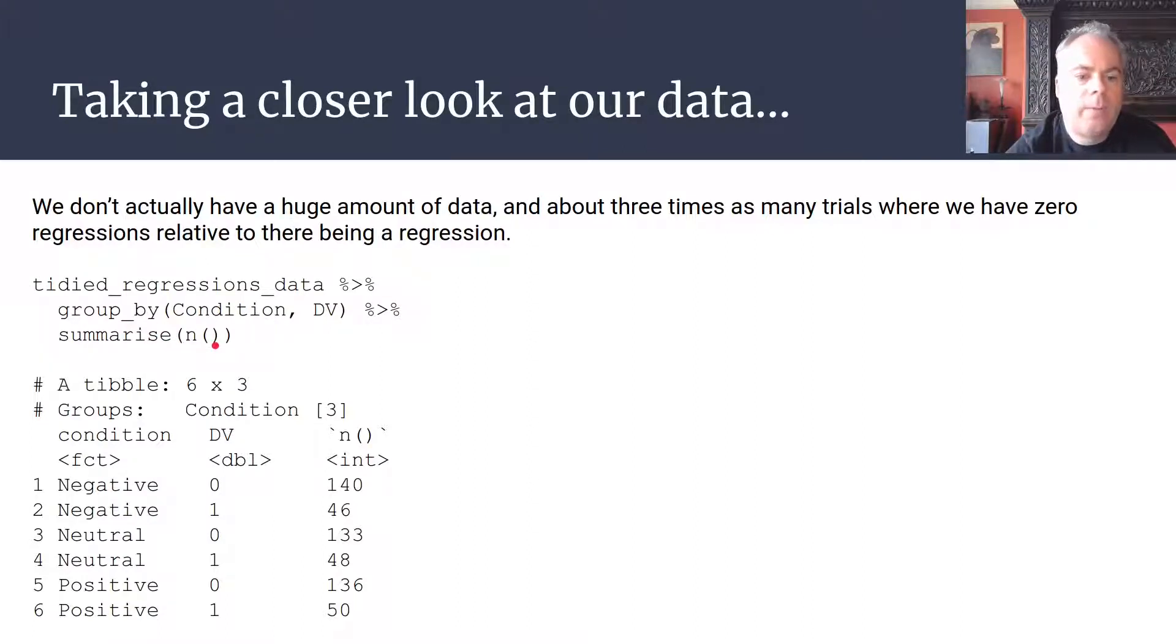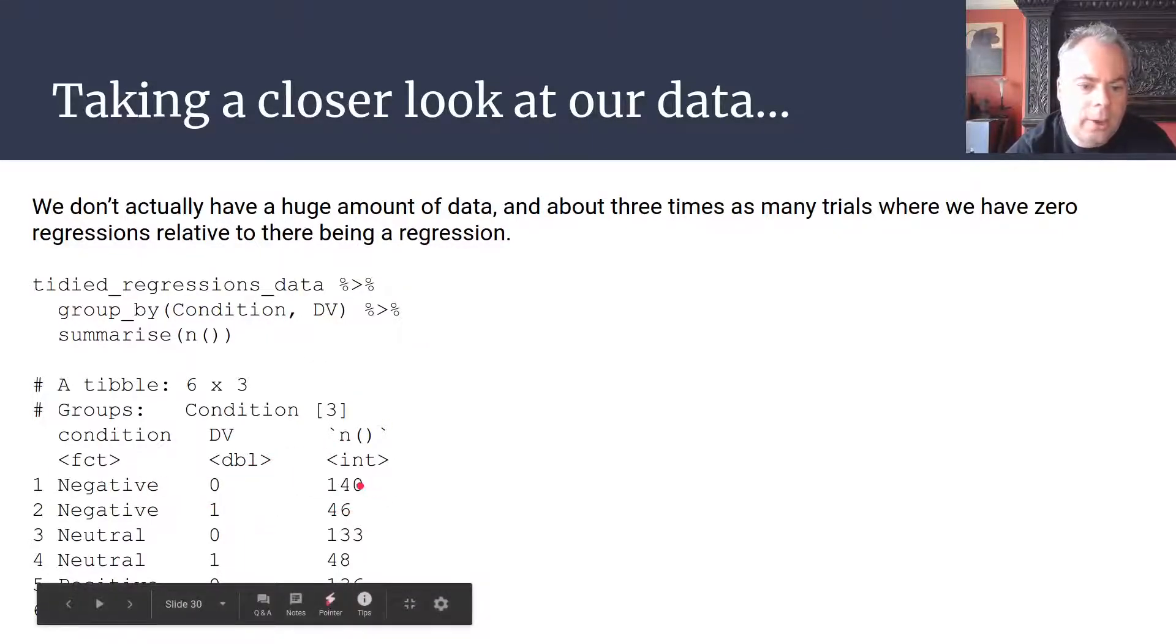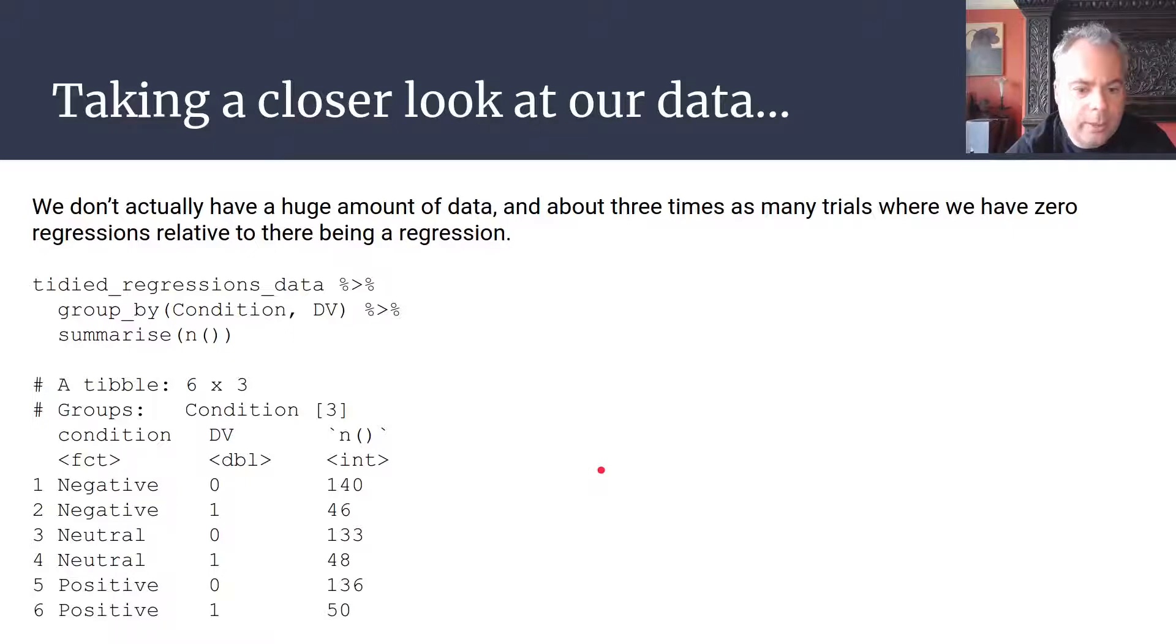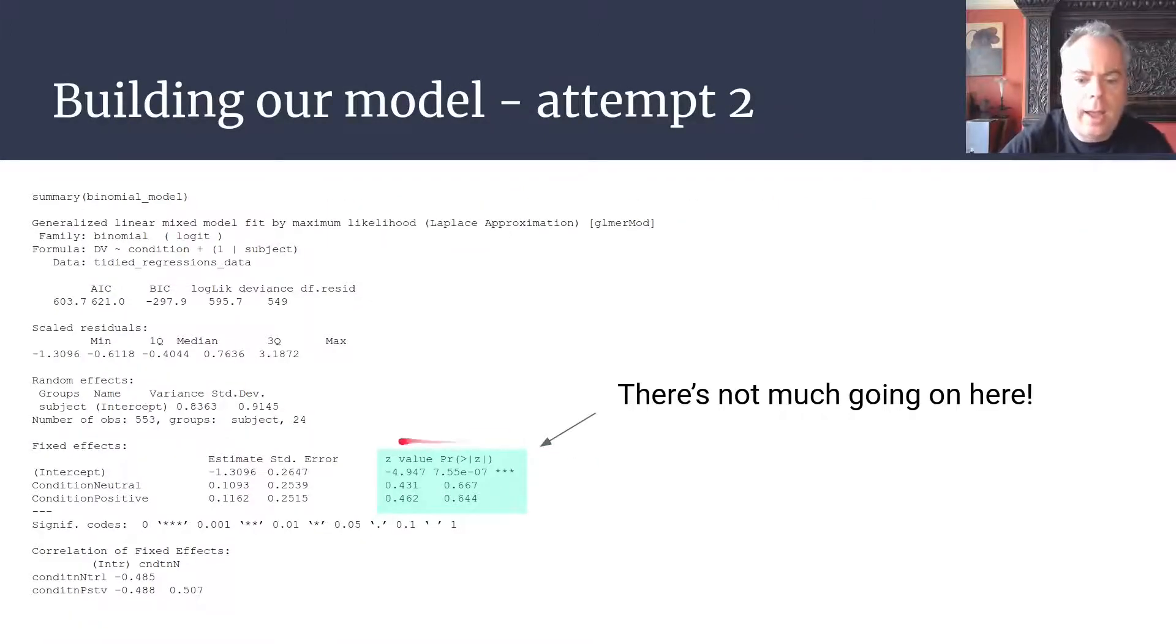You can see for the negative condition there are 140 trials where we have no regressions, 46 trials where we do have regressions. For the neutral condition, we've got 133 trials where we don't have regressions, only 48 where we do have regressions. It's the same sort of pattern for the positive condition too. We've got a very impoverished data set—we don't have much data here, we don't have much evidence of regressions happening really at all. I should say actually, if we had found significant differences here, if we had found that some of our conditions seem to differ from some of our other conditions, or if we had even a factorial design—